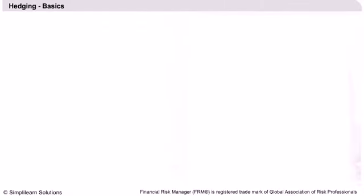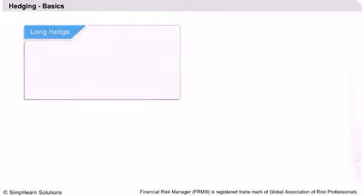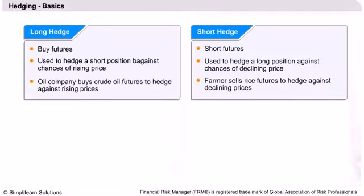In financial markets, any trader can be in a long or a short position. In a long position, the trader has a requirement to sell an asset on a future date. While in a short position, the trader needs to purchase the asset on a future date. For example, a farmer who has yet to harvest his crops is in a long position, as he will need to sell the crops on a future date when the harvesting is complete.